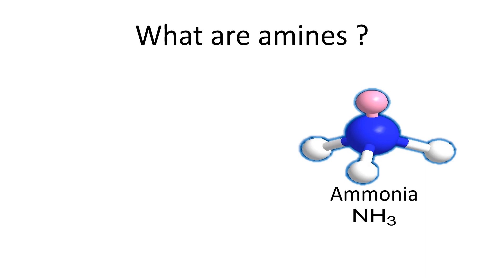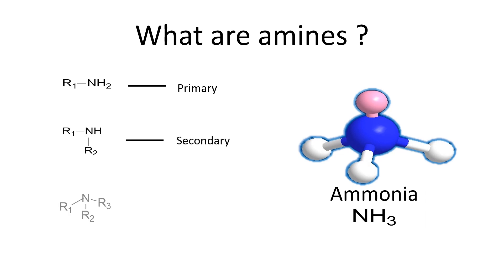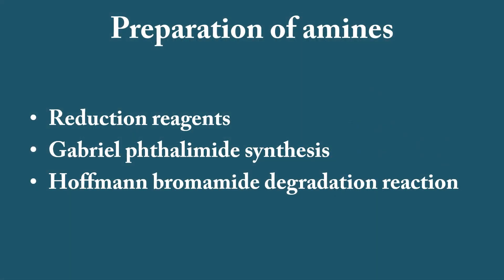As I said, amines are the derivatives of ammonia. If we replace one hydrogen atom from ammonia and substitute an alkyl or aryl group, then we get a primary amine — substitution represented as R1. If we replace two hydrogen atoms, it is called secondary amine. Then comes tertiary amine.